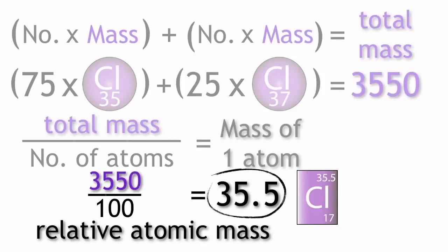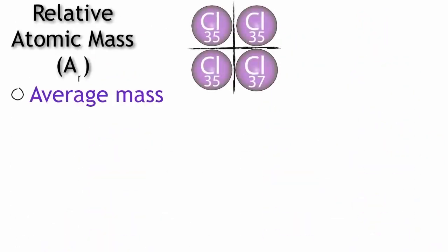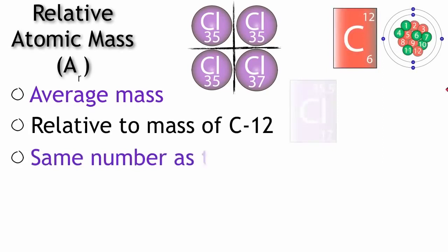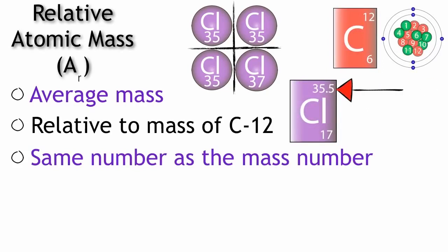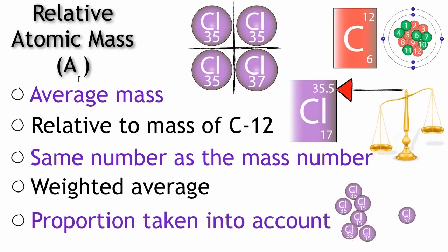The relative atomic mass has a value closer to 35 because there are more atoms of chlorine-35 than chlorine-37 — it is a weighted average. So the relative atomic mass of an element is defined as the average mass of the naturally occurring isotopes of the element relative to the mass of an atom of carbon-12. On the periodic table it is the same number as the mass number. The number is a weighted average, and when calculating its value, the proportion of an isotope in a sample must be taken into account.